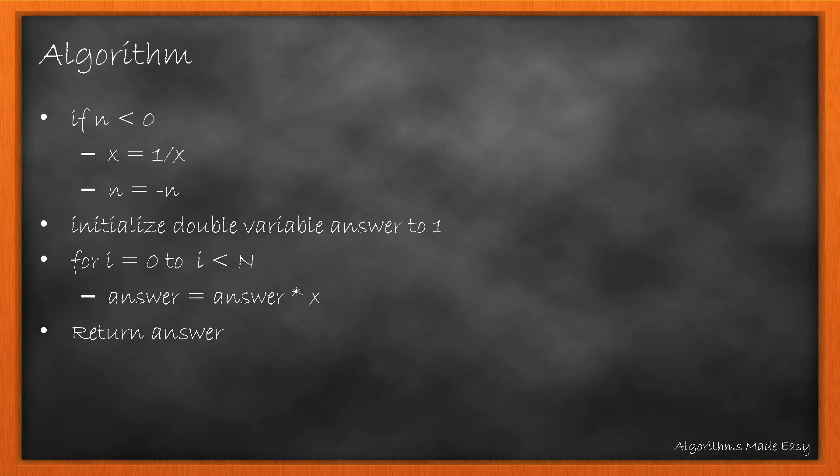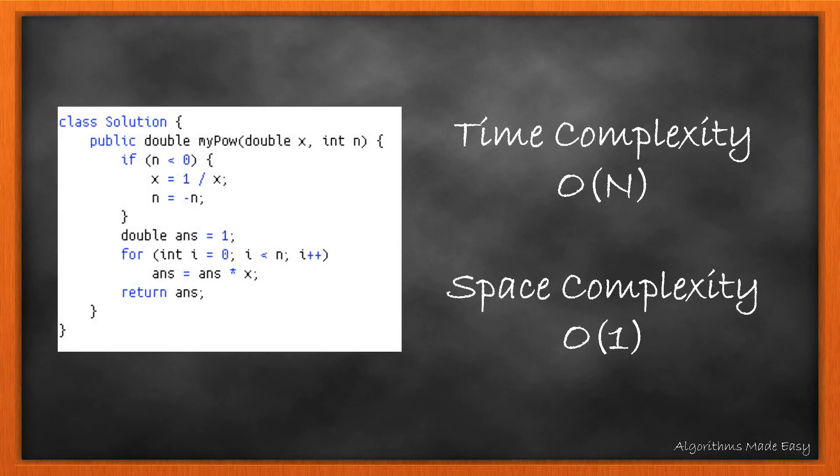The algorithm here is simple. We first check if n is less than 0. If yes, we update x to 1 by x and n to minus n. We then initialize an answer variable to 1 and loop from i equal to 0 till i is less than n, keeping multiplying the answer by x each time. At the end, we return the answer. The time complexity here is O(n) as we are looping n times. The space complexity is O(1) as no extra space is used. You can find the link to this code in the description below.